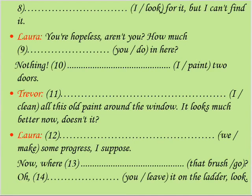Sentence number eight: 'I have looked for it but I can't find it۔' Laura: 'You are hopeless, aren't you? How much have you done in here?' 'Nothing — I have painted two doors۔' Trevor number 11: 'I have cleaned all this old paint around the window — it looks much better now, doesn't it?' Number 12: 'We have made some progress, I suppose۔' Number 13: 'Where has that brush gone?' Number 14: 'You have left it on the ladder۔'